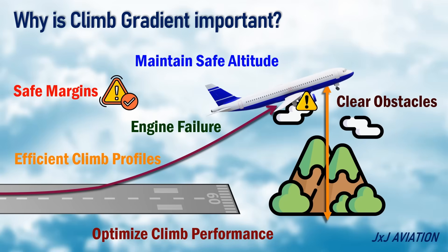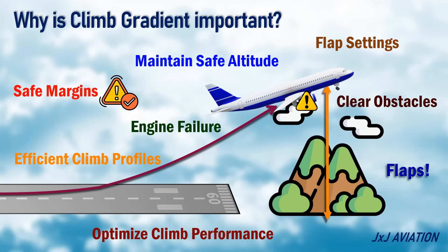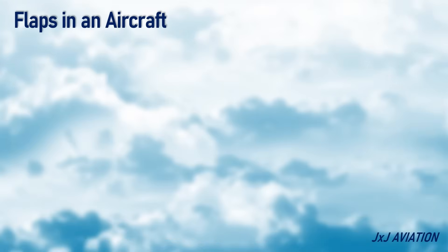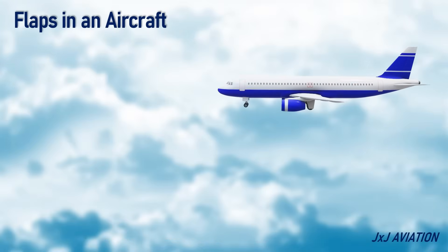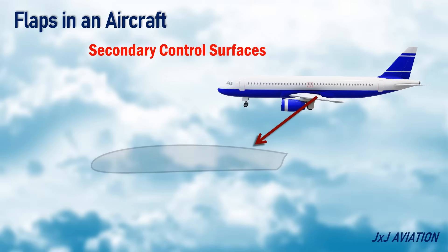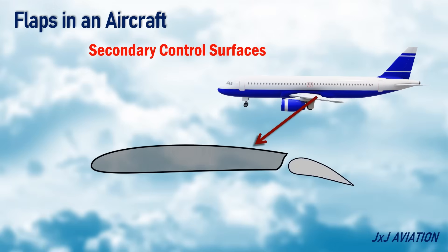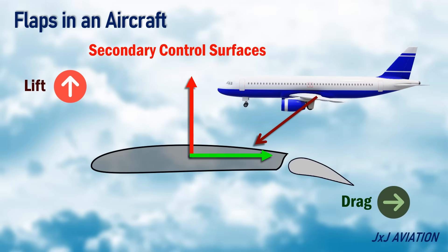One of the factors that impacts the climb gradient is the flap settings. Let's understand flaps. Flaps are secondary control surfaces installed on the trailing edge of the wings. When the flaps are extended, it increases the lift and the drag generated by the wings. The increase in lift reduces the takeoff distance.